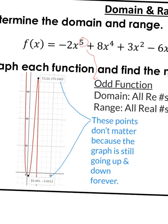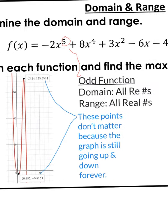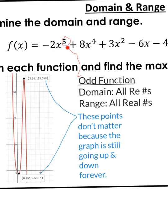This one, so this long function here, 2x to the 5th power, and then you have 4th power, 2nd power, and then x, and then nothing. Remember the degree is determined by the highest power. So the highest power is 5. That's an odd number, so this is an odd function. Meaning the domain is all real numbers and the range is all real numbers.